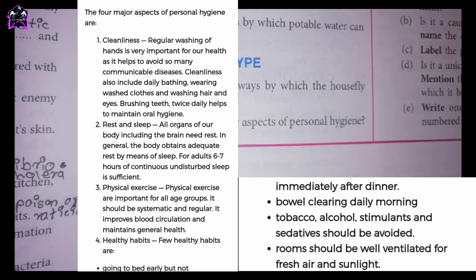3. Physical exercise. Physical exercise is important for all age groups. It should be systematic and regular — it improves blood circulation and maintains general health. 4. Healthy habits. A few healthy habits are: going to bed early but not immediately after dinner, bowel clearing daily in the morning, and avoiding tobacco, alcohol, stimulants and sedatives.